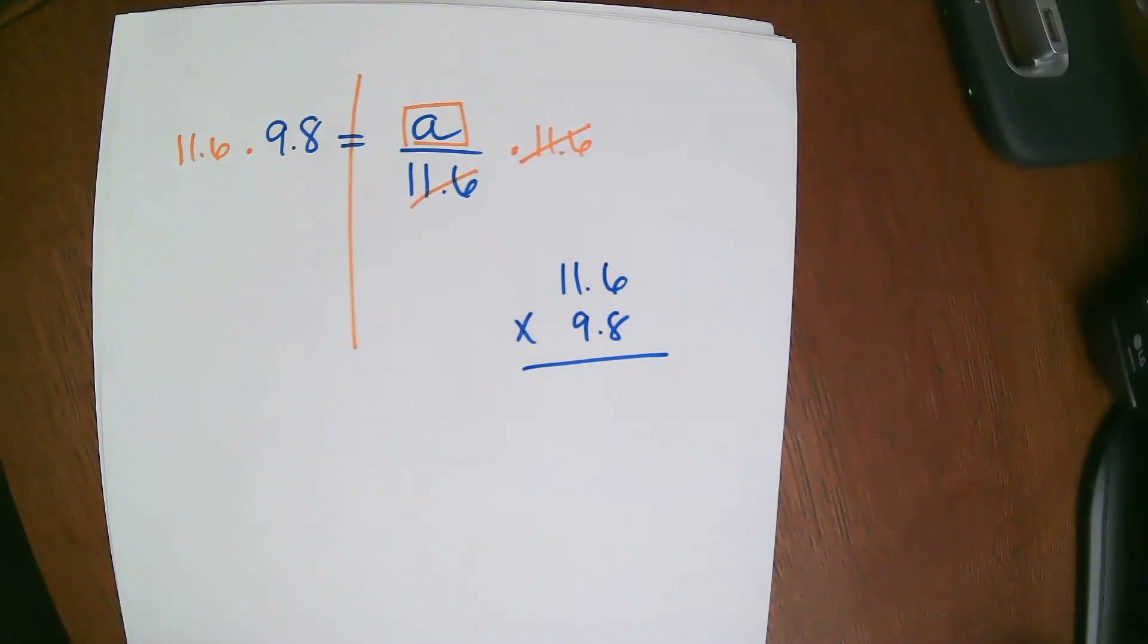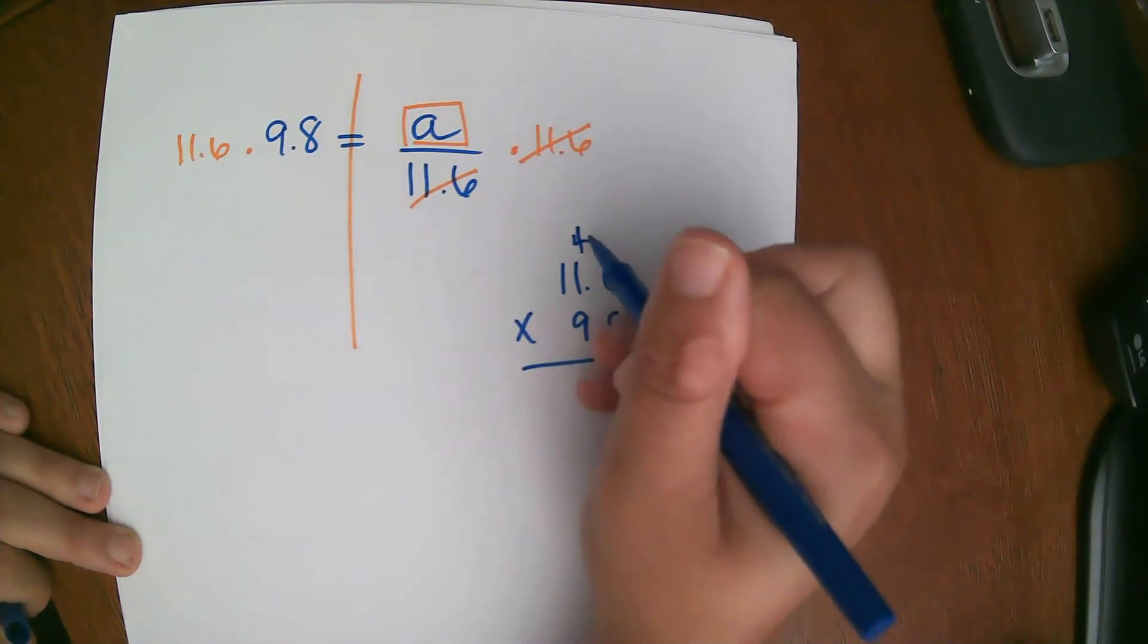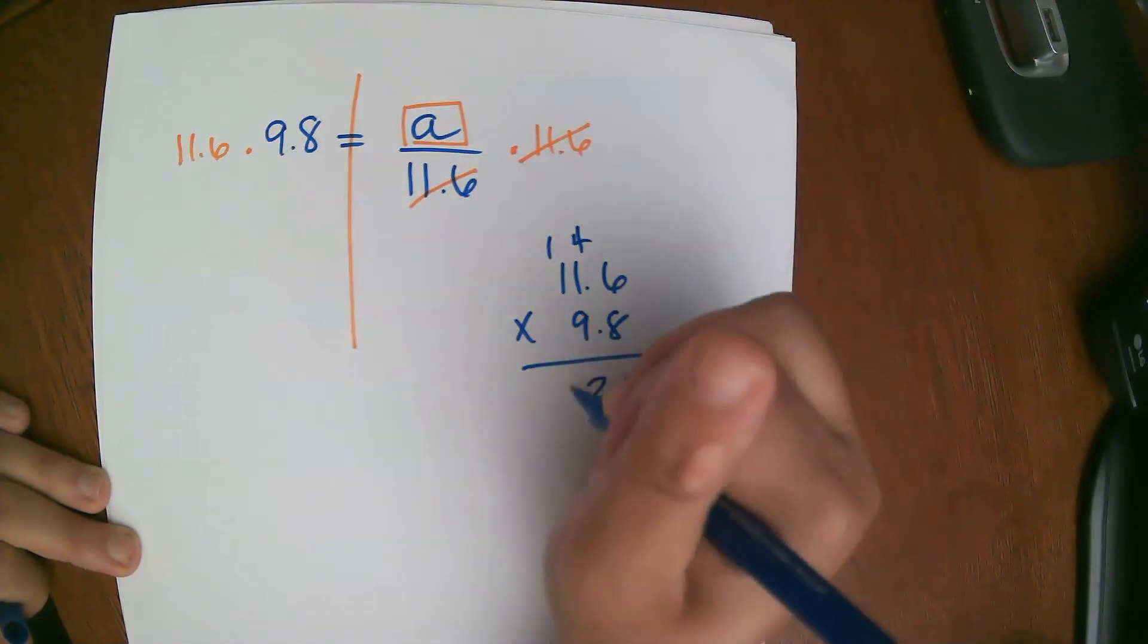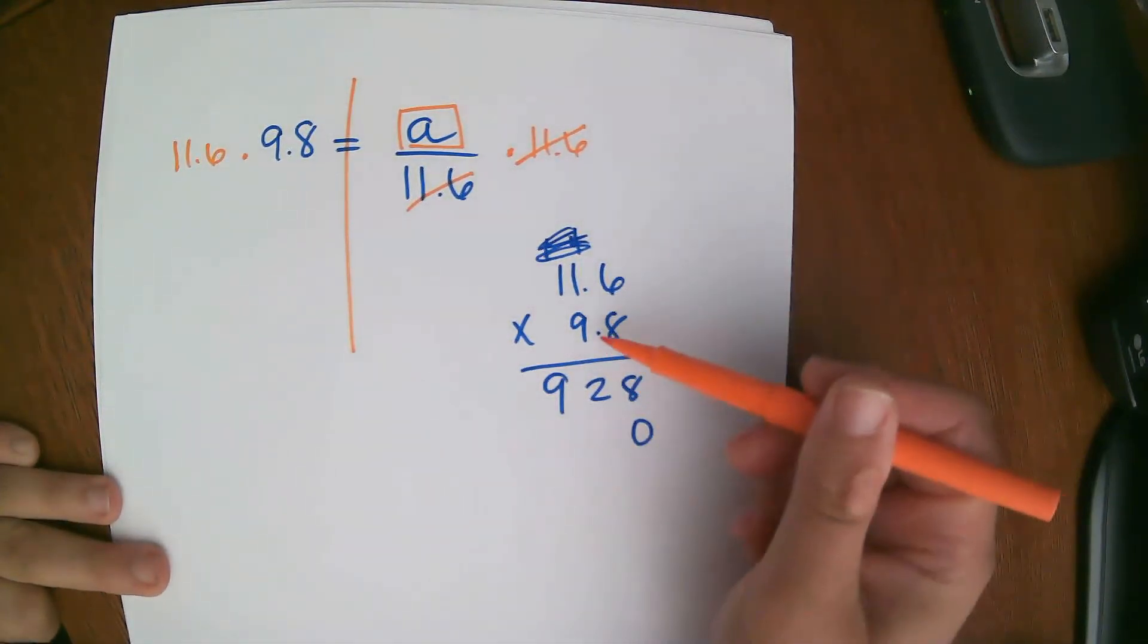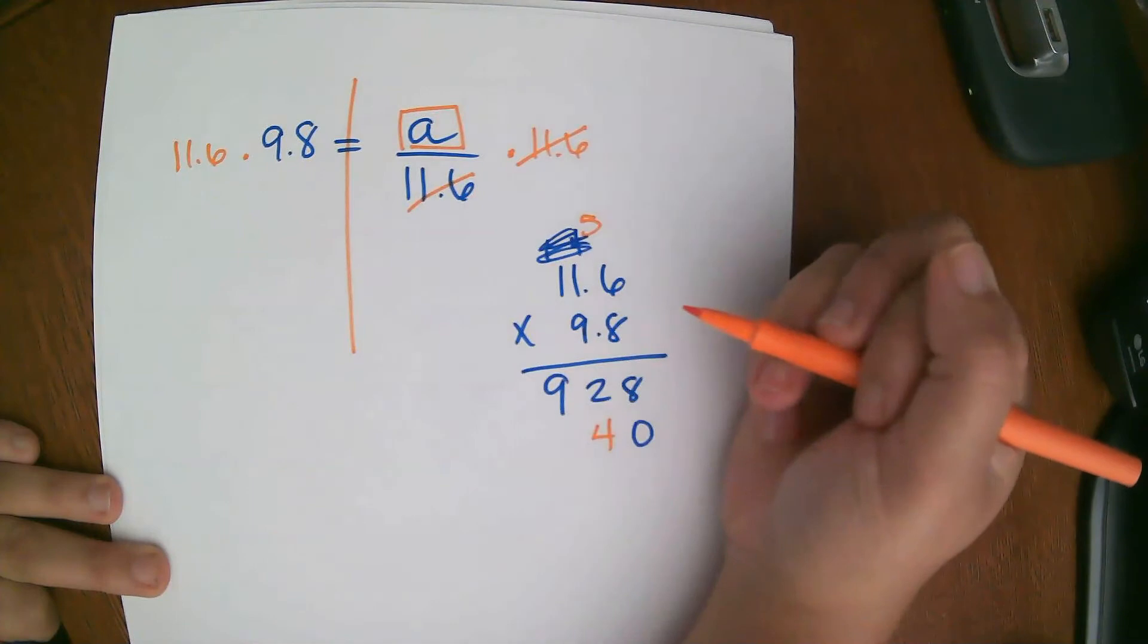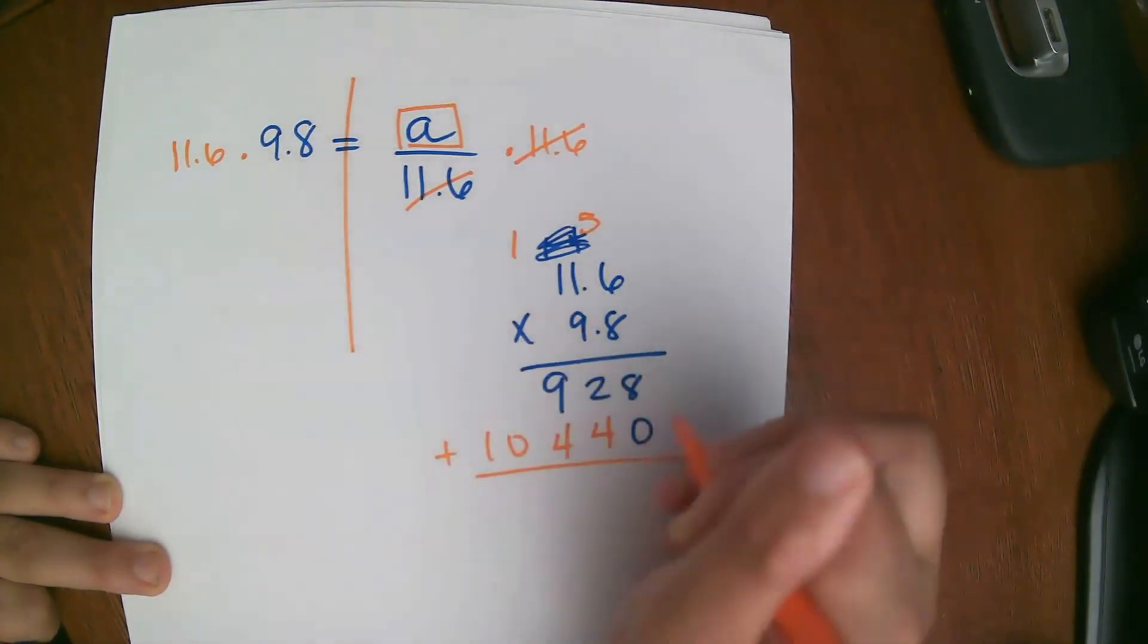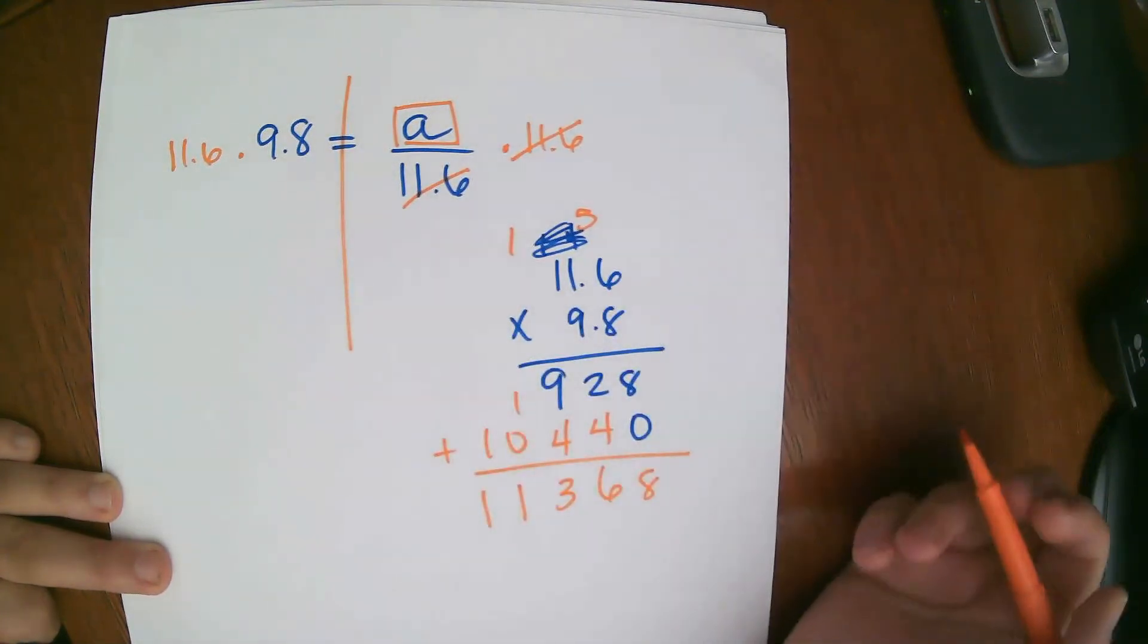Just multiply it out. Don't worry about the decimals at this point. Give you a chance to write that down. So 6 times 8 is 48. Carry the 4. 8 times 1 is 8. Plus 4 is 12. Carry the 1. 8 times 1 is 8. 8 plus 1 is 9. Placeholder. Get rid of all this work. I like to switch colors when I switch numbers. So 9 times 6 is 54. Carry the 5. 9 times 1 is 9. Plus 5 is 14. Carry the 1. 9 times 1 is 9. Plus 1 is 10. Add everything up.